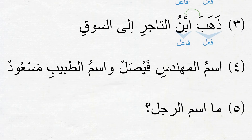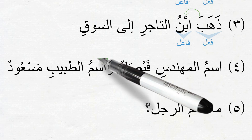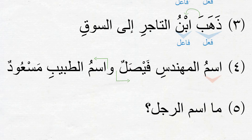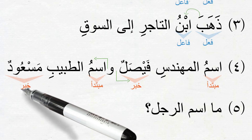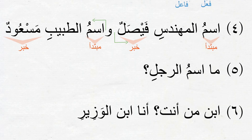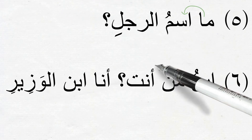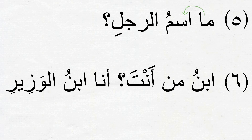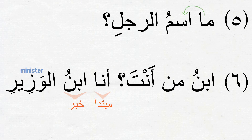Next: اسْمُ الْمُهَنْدِسِ فَيْصَلٌ وَاسْمُ الطَّبِيبِ مَسْعُودٌ — The name of the engineer is Faisal and the name of the doctor is Mas'ud. Two اسمية sentences connected by حَرْفُ عَطْف; اسْمُ in each is the مُبْتَدَأ, and فَيْصَلٌ and مَسْعُودٌ are the خَبَر respectively. Sentence five: مَا اسْمُ الرَّجُلِ — What is the name of the man? We connect مَا to اسْمُ, dropping the كَسْرَة. Last sentence: ابْنُ مَنْ أَنْتَ؟ أَنَا ابْنُ الْوَزِيرِ — Whose son are you? I am the son of the minister. أَنَا is the مُبْتَدَأ, ابْنُ is the خَبَر and also مُضَاف, and الْوَزِيرِ is the مُضَاف إِلَيْهِ.